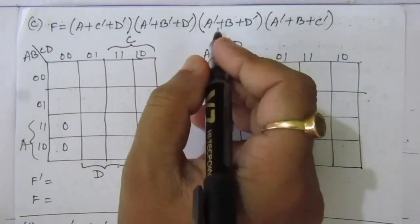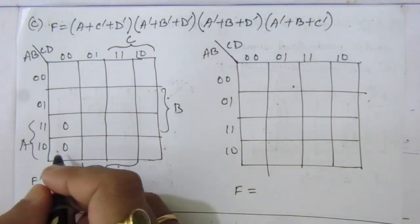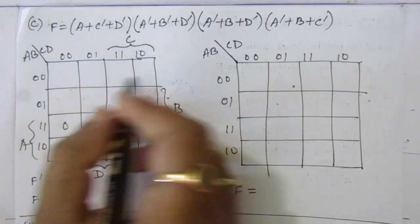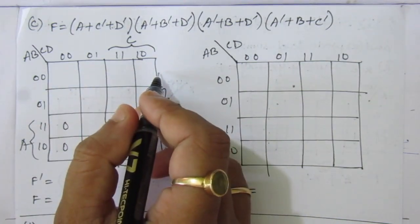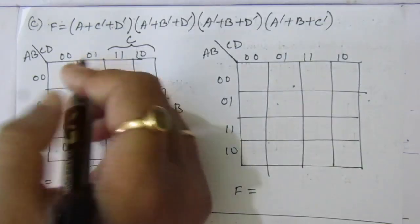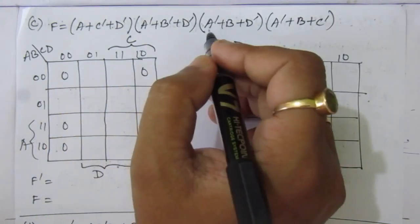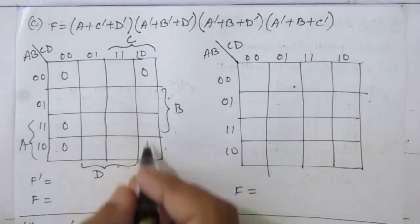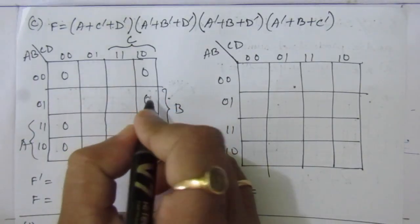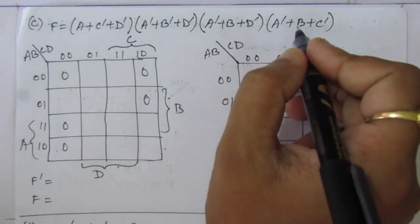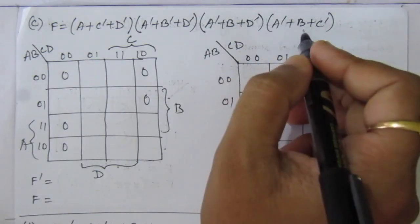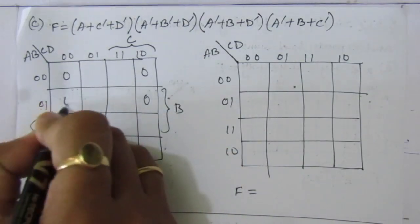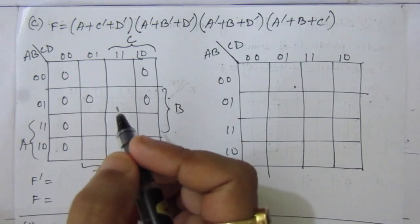Then we have a-bar + b-bar + d-bar: a-bar + b-bar is this row, and d-bar is the first column and the fourth column, so we put here zero and zero. Then we have a-bar + b + d-bar: b d-bar is this column and a-bar is the first two rows, so we put here one — wait, we put zero since it's POS. Then we have a-bar + b + c-bar: a-bar b is the second row and c-bar means the first two columns, so we put zero here.